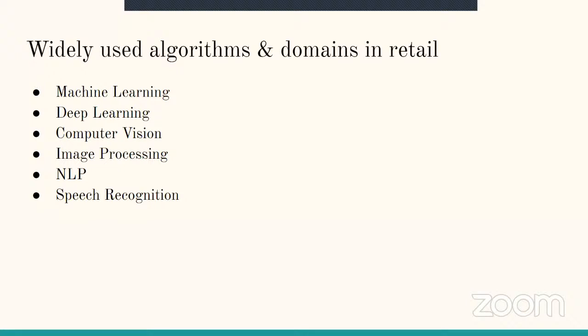In retail, these are a few algorithms and domains. One is machine learning, which simply deals with some machine learning algorithms like logistic regression, linear regression, and random forest. You can also use boosted trees — these all fall under the machine learning category. Then one step further will be deep learning algorithms where we are using neural nets. Once you are scaling up your product and have collected sufficient data, in the production environment we tend to go towards deep learning algorithms.